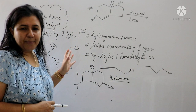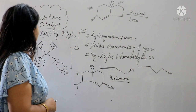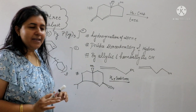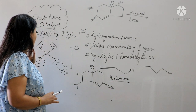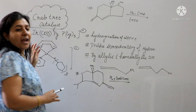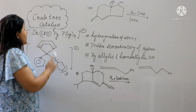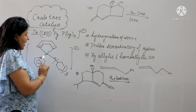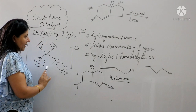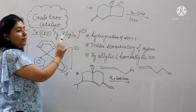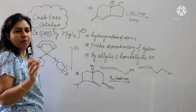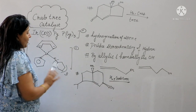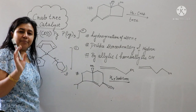First of all we are going to start with the Crabtree catalyst. This is the Crabtree catalyst. It contains iridium, cyclooctadiene, pyridine, and a phosphorus cyclohexyl group. Just keep the following structure in mind as I explain it.